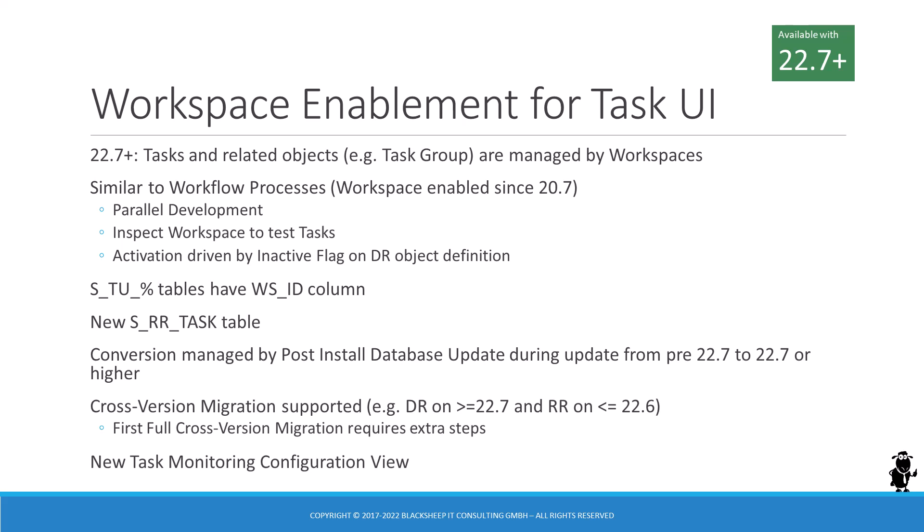Task flows and related object types, such as task groups, now support full parallel development. Developers can use the application's inspect feature to test changes to tasks before delivering. Task activation is now driven by the inactive flag in the design repository, which means that automated or manual activation of tasks in the RR environments after a full or incremental migration is no longer necessary.